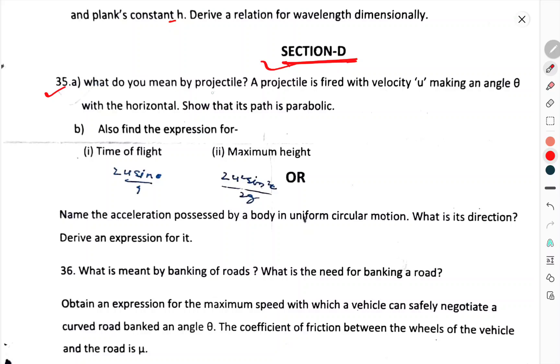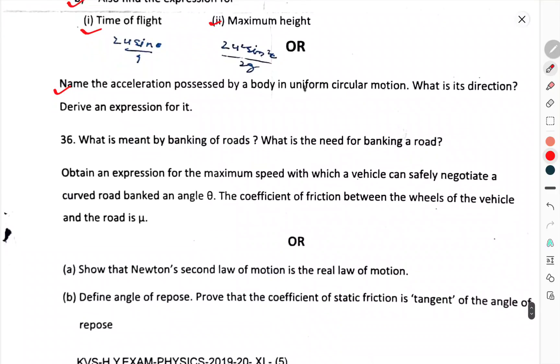Question number 35. What do you mean by projectile? A projectile is fired with velocity u making an angle theta with the horizontal so that its path is parabolic. Find the expression for time of flight and maximum height. Or name the acceleration possessed by a body in uniform circular motion. What is the direction? Derive an expression for it.